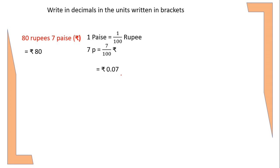rupees. I will add this one to the 80 rupees. Once I add this 80 rupees plus 0.07, we'll get the answer as rupees 80.07.